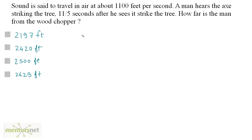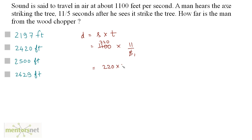So you know what is distance? Distance is equal to speed into time. We have the speed as 1100 feet per second times the time, which is 11 by 5 seconds. So 11 by 5 — 5 times 220 is 1100, and 220 times 11 is equal to 2420 feet, which is the distance between the person and the wood chopper.